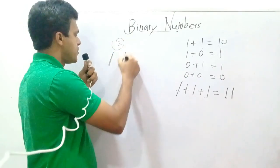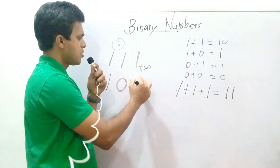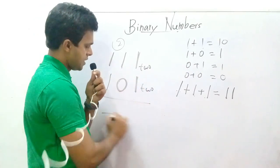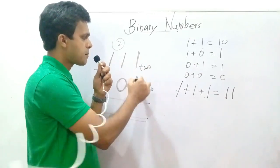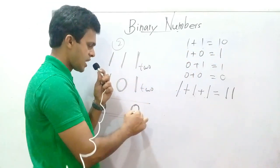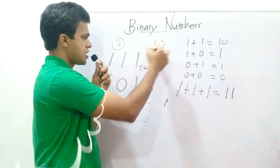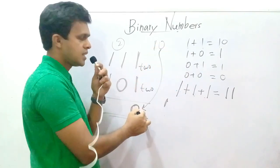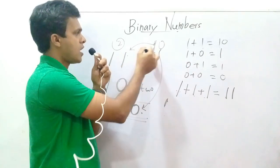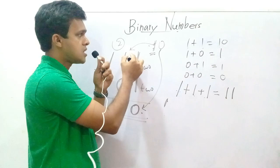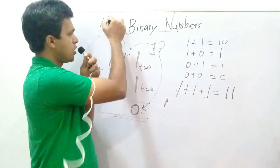The number is one-one-one (111) base two. Let's add these binary numbers. One plus one is one-zero (10): you write zero here and the remainder is one. You know that one plus one is ten — the zero is written here and the remainder one is carried over. That carried one and the next one are added: one plus one again is one-zero (10). Zero plus zero is zero.